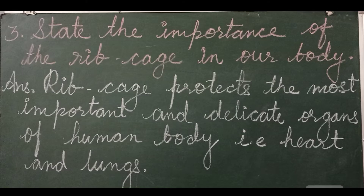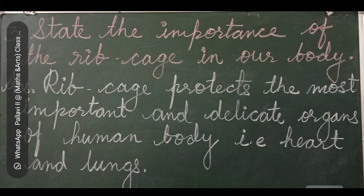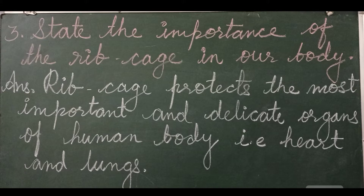Question 3: State the importance of the rib cage in our body. Answer: The rib cage protects the most important and delicate organs of the human body, yaani ki bahut naazuk organs. Heart and lungs are the two delicate organs which are protected by the rib cage.